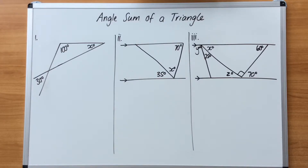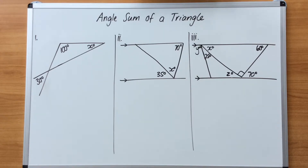Continuing with angle sum of a triangle, we're going to look at more complex questions now. You must have knowledge of angles: corresponding, co-interior, supplementary, vertically opposite. You need that information in order to solve these missing angles.